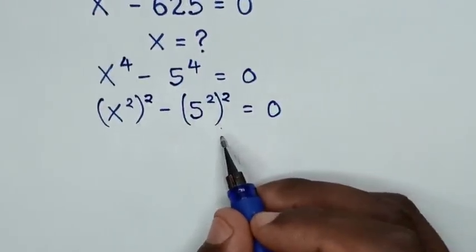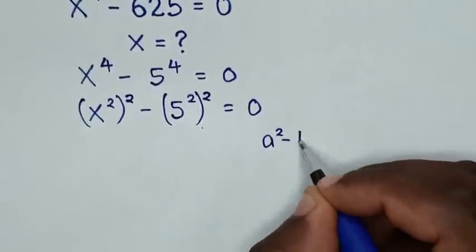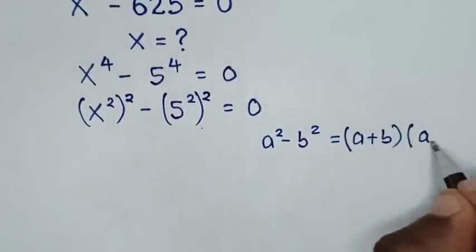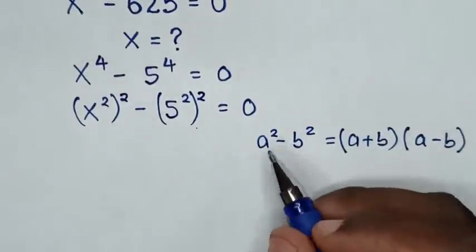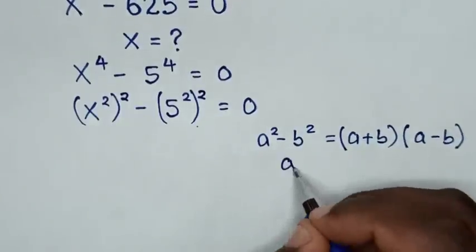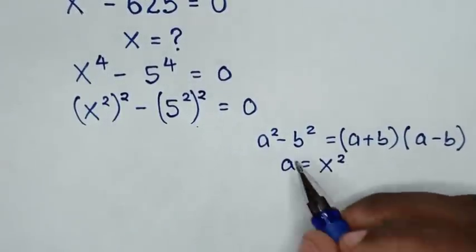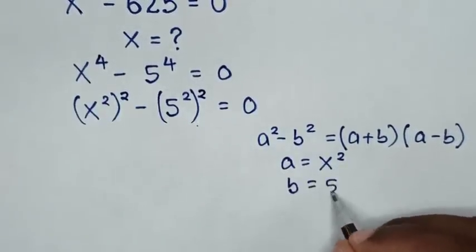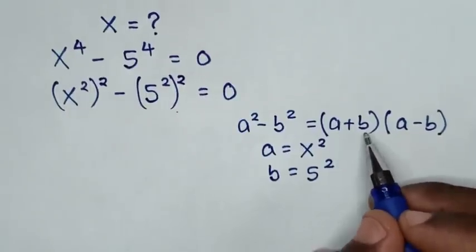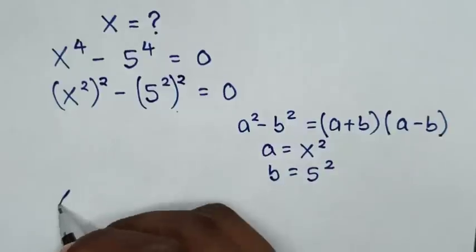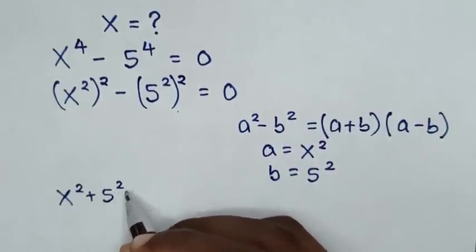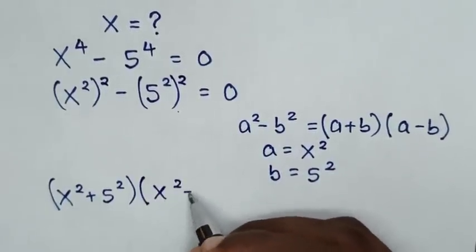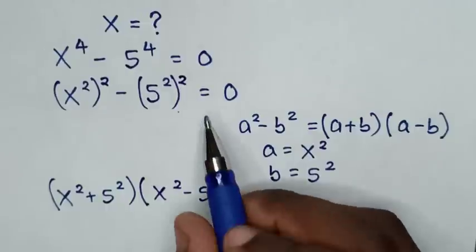Now, this part is a perfect square. So we apply the rule: a squared minus b squared equals a plus b, times a minus b. When we compare a squared with x squared in brackets squared, then a equals x squared. And when we compare b squared with 5 squared in brackets squared, then b equals 5 squared. So a plus b gives x squared plus 5 squared, times a minus b gives x squared minus 5 squared, equal to 0.